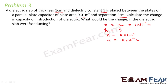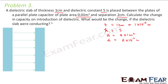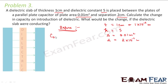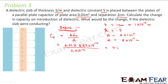We have to calculate the change in capacitance on introduction of the dielectric. First we will calculate the capacitance without the dielectric. Before any slab is introduced, the capacitance is equal to A·ε₀ / D. So A = 0.01, ε₀ = 8.85×10⁻¹², and D = 2×10⁻². This value comes out to be 4.425×10⁻¹² farads. This is the capacitance when no slab is introduced.